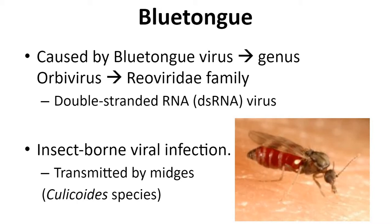All viruses that are transmitted by insects are grouped together and called arboviruses, and hence blue tongue virus is an arbovirus as well. And just like many other insect-transmitted viruses, there is seasonality of the disease associated with vector availability.